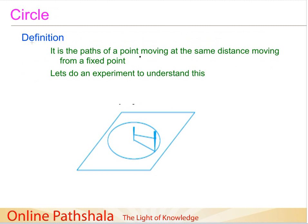Now let us move ahead and discuss the definition of a circle. A circle is the path of a moving point at the same distance from a fixed point. There are two important concepts: we have a fixed point, and then we have a point that moves at a fixed distance from this fixed point.